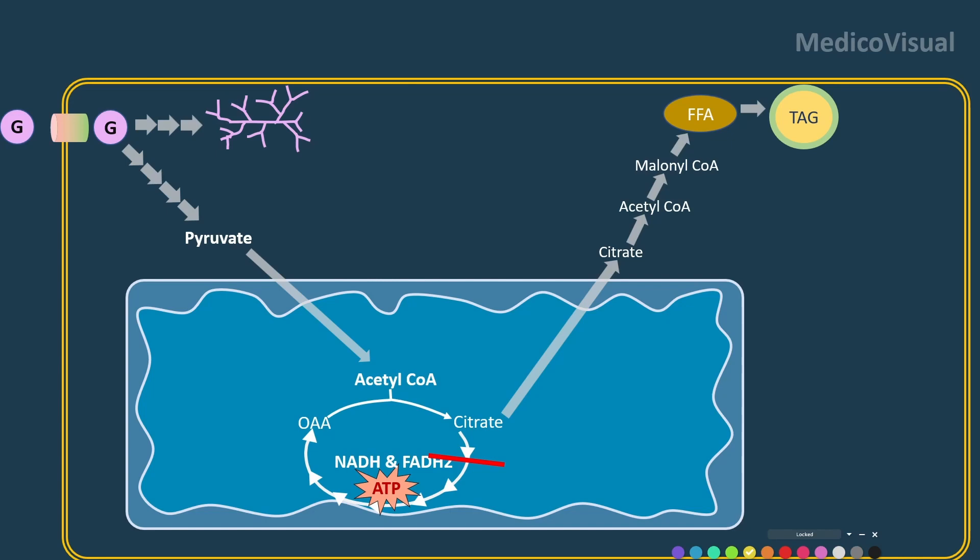then these triglycerides will not be released outside as VLDL. Instead, they will be stored within the cell as intracellular intramyocellular triglyceride stores — fat stores for use as energy later when required.